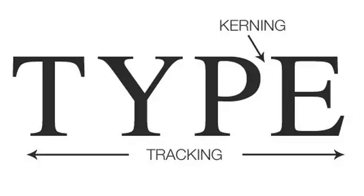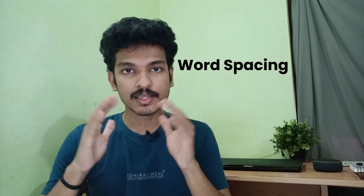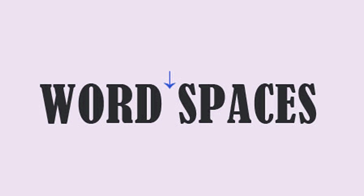The next thing we are interested in is the tracking. The tracking is the overall spacing between letters. The fourth thing is word spacing — it is the distance between words.